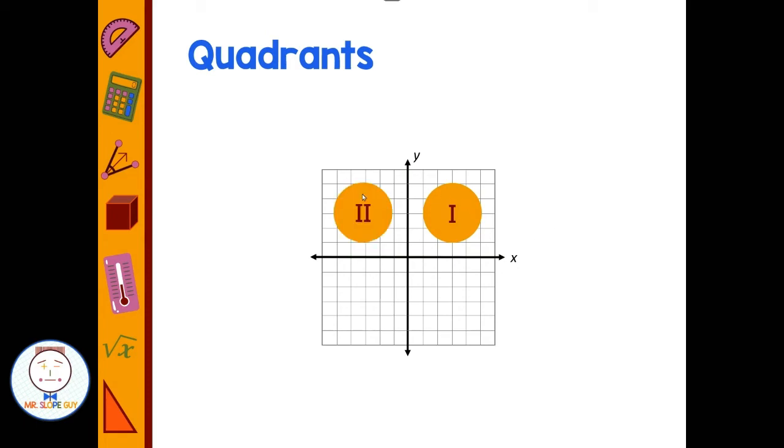So the ordered pairs in each of these quadrants have specific characteristics. Everything in quadrant I, the x is positive and the y is positive. So you have a positive first number, positive second number. So every ordered pair up here: positive, positive. Then in quadrant II we move left, so we have negative x values, positive y values.